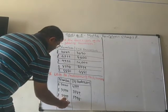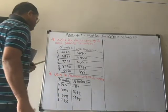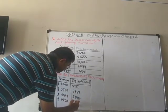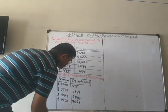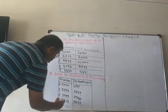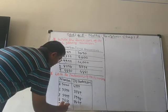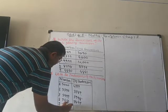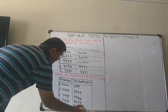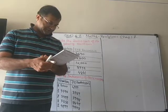Seven thousand eight hundred and fifty — subtract one — the answer is seven thousand eight hundred and forty-nine. Nine thousand nine hundred and ninety-nine — subtract one — the answer is nine thousand nine hundred and ninety-eight.